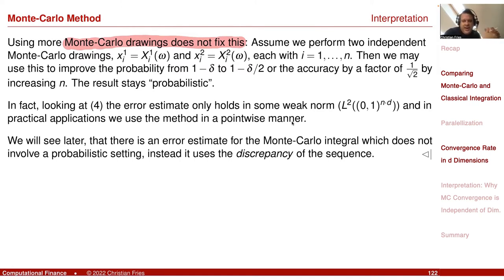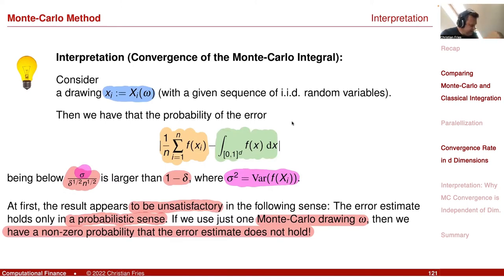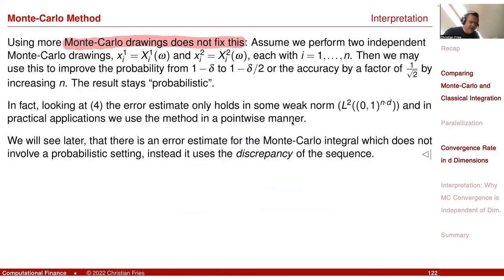Either you can use more points to improve the probability — making the delta parameter smaller by a factor of one half by just doubling n — so you have the same bound with a smaller delta. Or you can improve the accuracy by a factor of 1 divided by square root of 2, keeping the same delta but making the bound smaller. If you double the number of points, you get a bound that is 1 divided by square root of 2 smaller. But the whole result stays probabilistic.